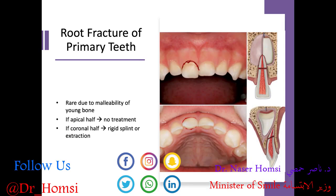Root fracture of primary teeth is actually pretty rare due to the malleability of bone in young patients, so crown fractures are more common. If we do have a root fracture in the apical half of the root, no treatment is recommended — we let that root tip resorb physiologically as the permanent tooth comes in. But if the fracture is in the coronal half, we could consider a rigid splint to hold the coronal portion in place, or recommend extracting and maintaining space depending on where the underlying permanent tooth is.